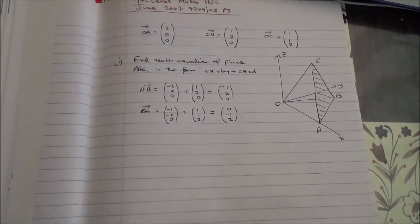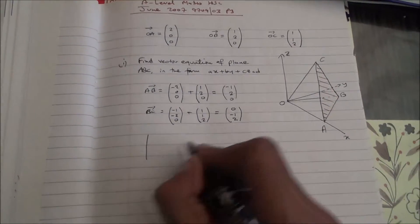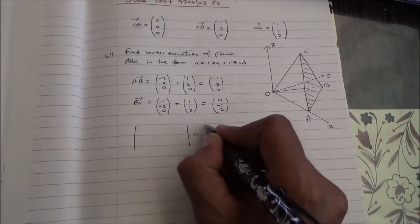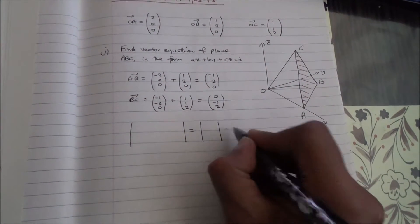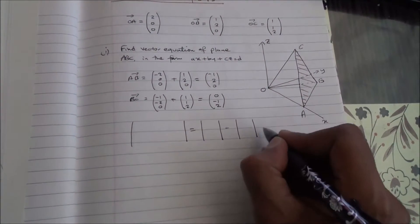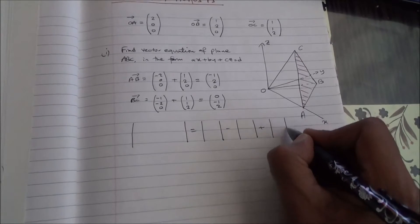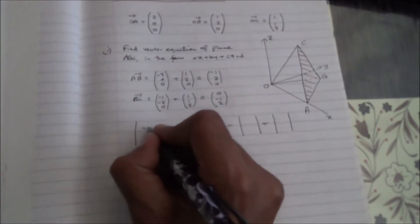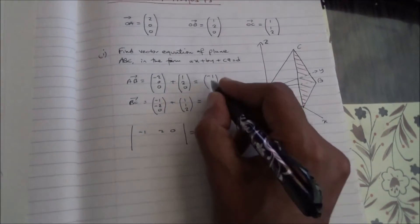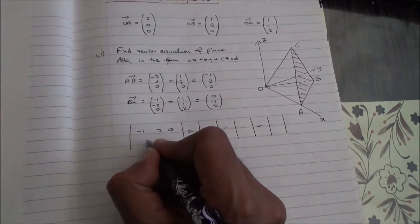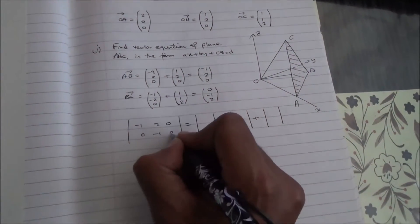We're going to use the matrix method. So, here we are, using the determinants of the matrices, it's going to help us to get the equation of the plane. Minus 1, 2, 0, 0 minus 1, 2.